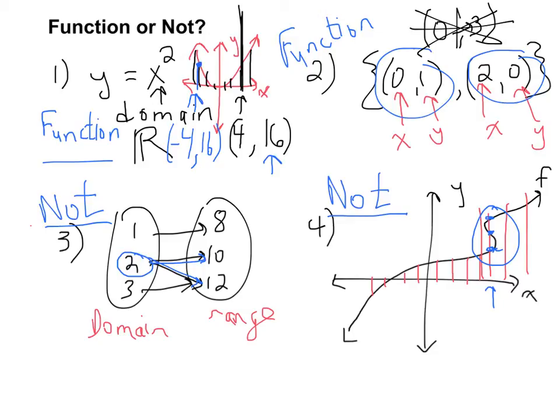The x value still has exactly one output. 4 is only paired with 16. Negative 4 is only paired with 16. Negative 4 is not paired with 14, or 15, or something else. And that's the idea of a function.